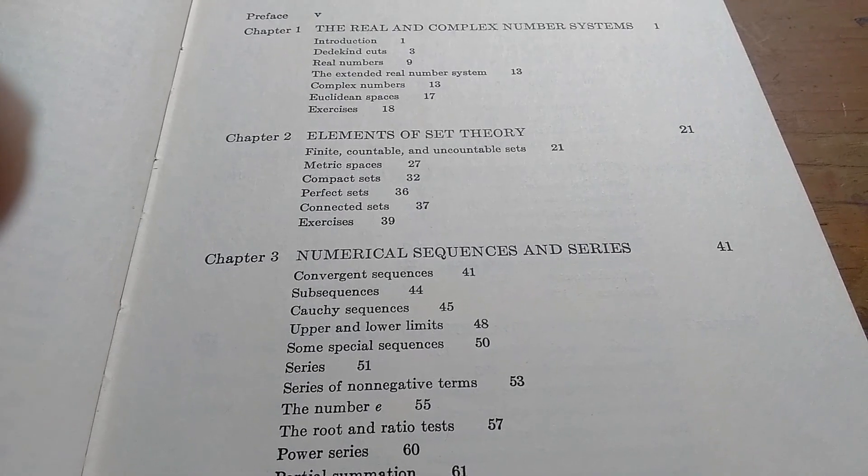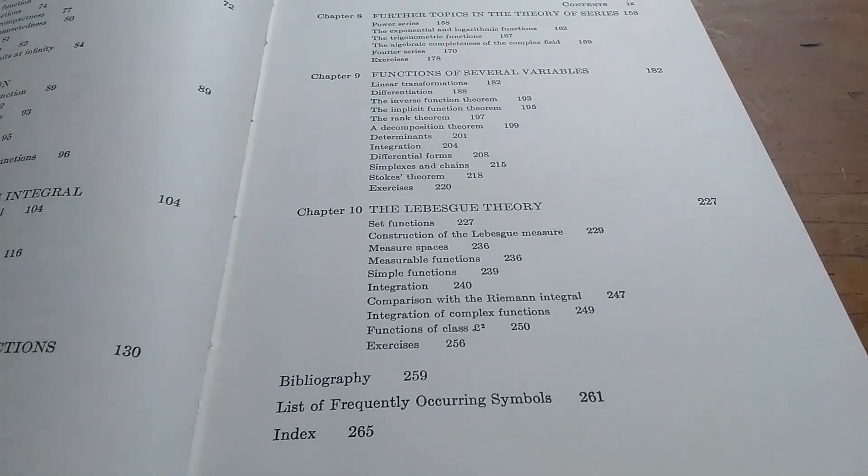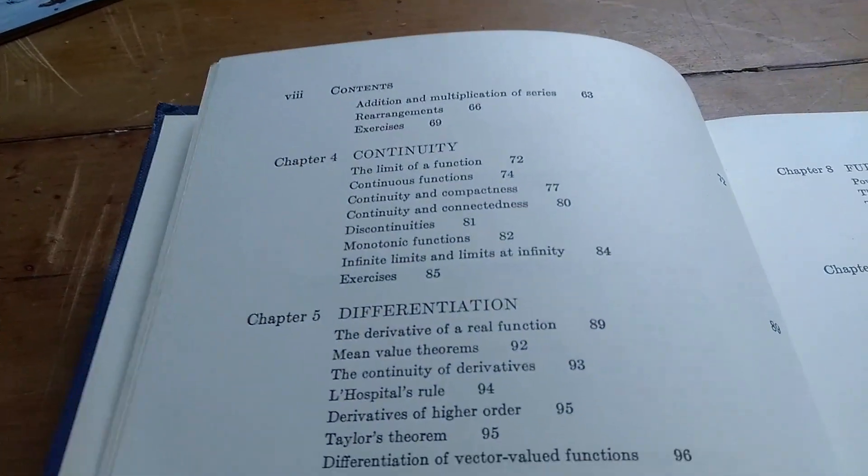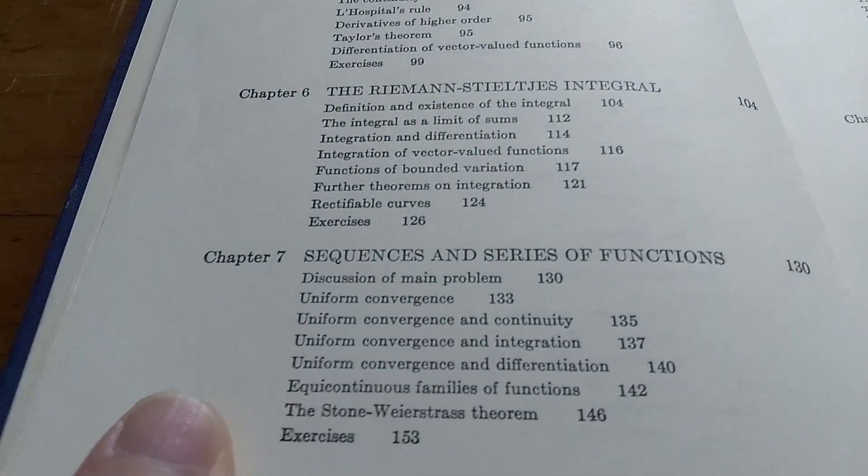Looking through the table of contents, we've got set theory, sequences and series. Let's turn the page, see what else we got. Up here it looks like we have continuity, differentiation, Riemann integral, sequences and series of functions.